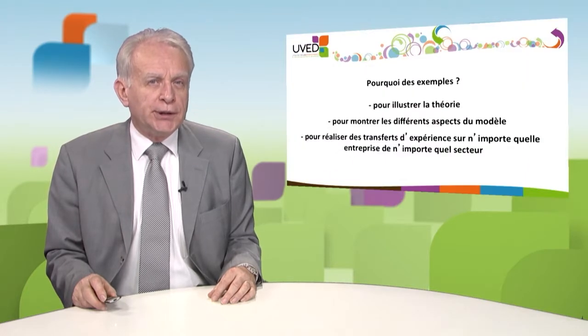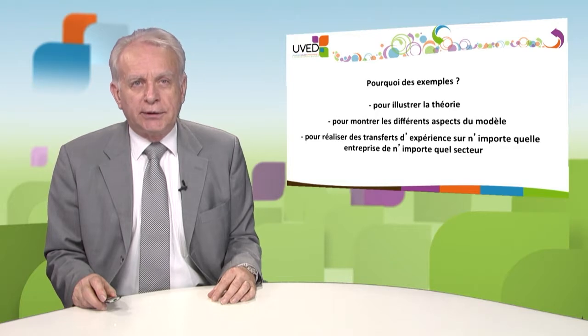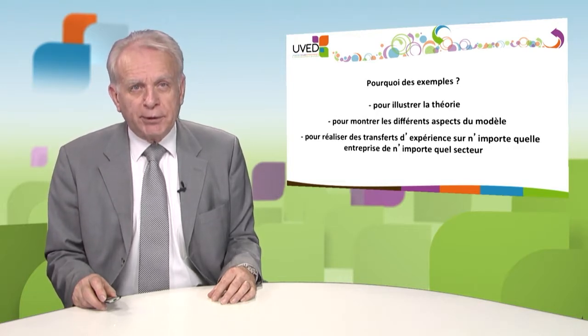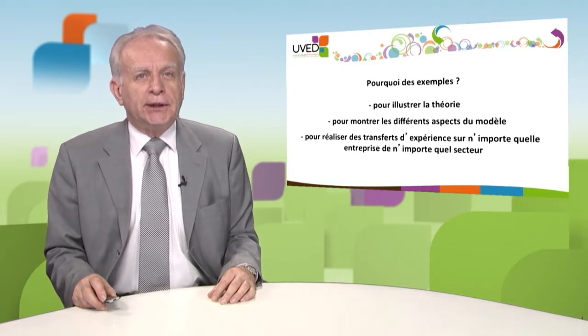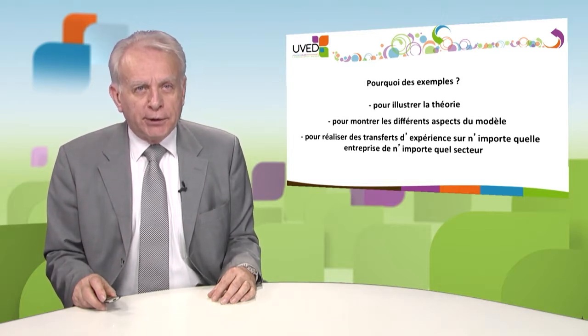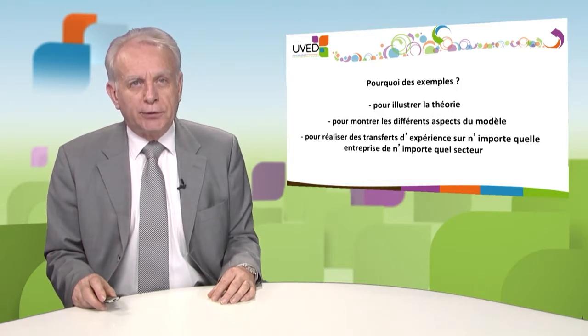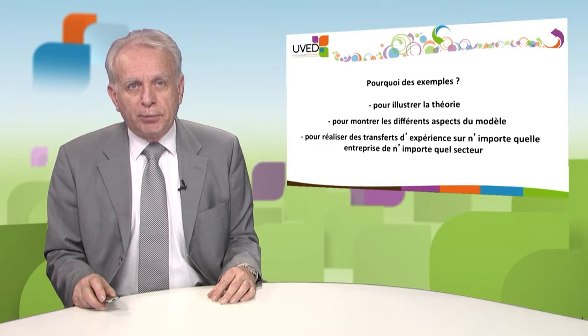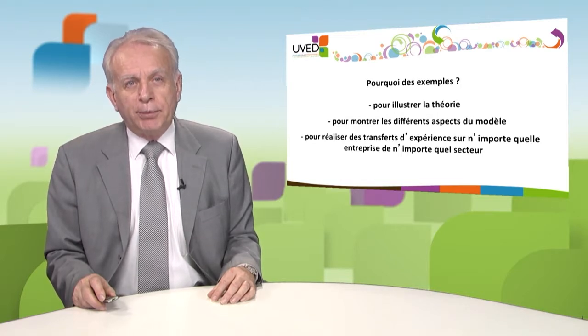Why examples? For many reasons: first, to illustrate theory, because a good example tells a lot. Second, because functionality economy is not a process — it's an economic model, not a business model, and it's far more interesting. The three examples selected are very different, sometimes contradictory or opposed. Third, it's important to transfer experience from the examples we study to any type of business.